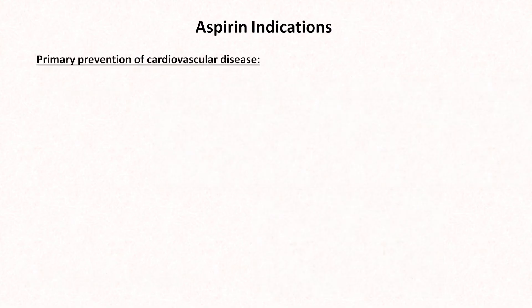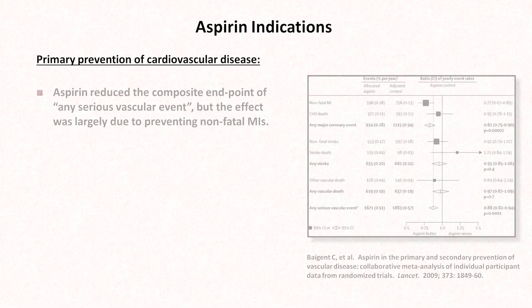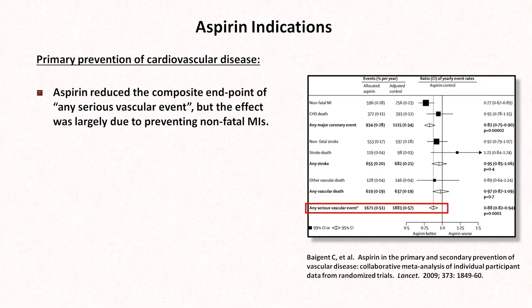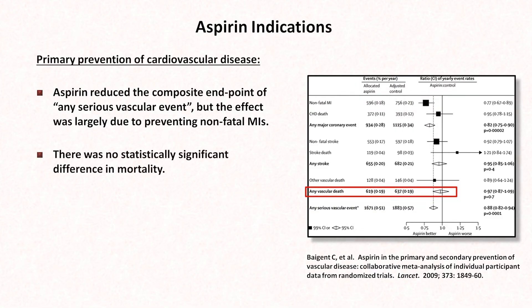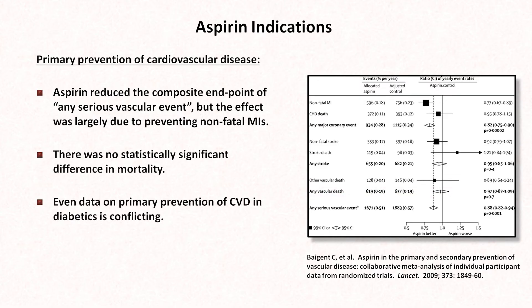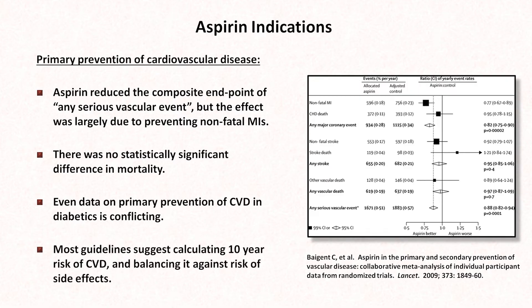Aspirin is also used for the primary prevention of cardiovascular disease, particularly in older individuals with cardiovascular risk factors. A large meta-analysis in 2009 found that aspirin reduced the composite endpoint of any serious vascular event, but the effect was largely due to preventing non-fatal MIs, with no statistically significant difference in mortality. Most guidelines suggest calculating the 10-year risk of cardiovascular disease and balancing it against the risk of side effects. On the whole, the use of aspirin for primary prevention is not nearly as supported as it was a decade ago.